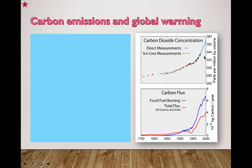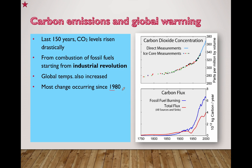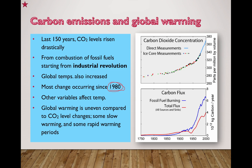Here are a few more graphs showing carbon dioxide concentrations. We talked about flux in topic four about ecology — flux meaning the movement of carbon when looking at nutrient cycles. Fossil fuel burning has contributed a lot of extra carbon into the atmosphere, and considering all other sources of carbon, it's likely the main contributor to increasing total carbon flux. For the last 150 years, we've seen carbon dioxide levels rise drastically from the combustion of fossil fuels, which we started primarily around the Industrial Revolution. At the same time, global temperatures have also increased, with most changes occurring since 1980. Other variables probably affect temperature too, but this is the largest impact we can actually measure.